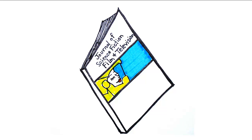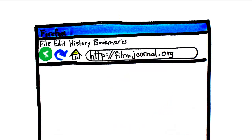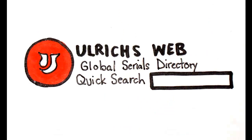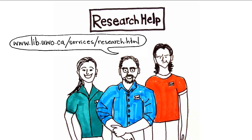To determine whether or not a journal uses the peer-review process, check the journal's website, Ulrich's Periodicals Directory Online, or ask a librarian.